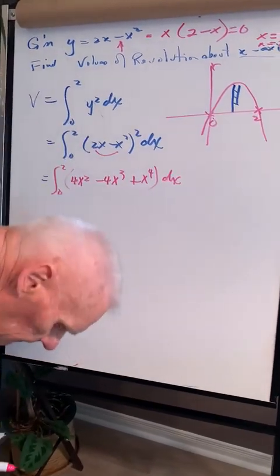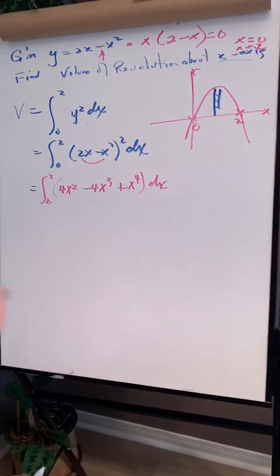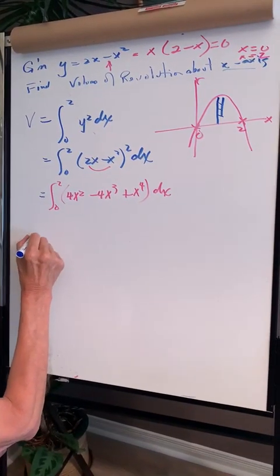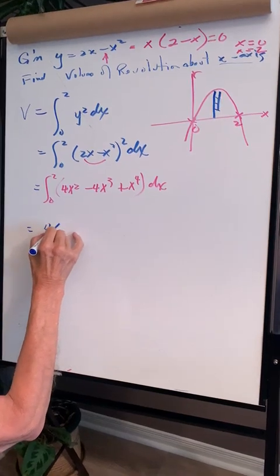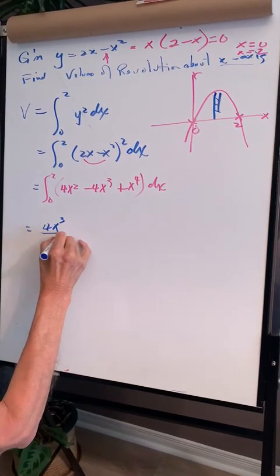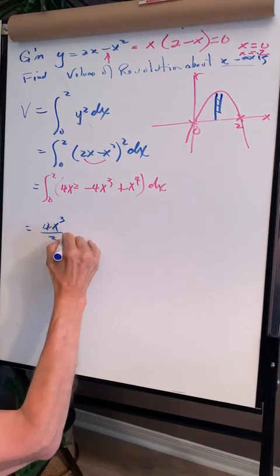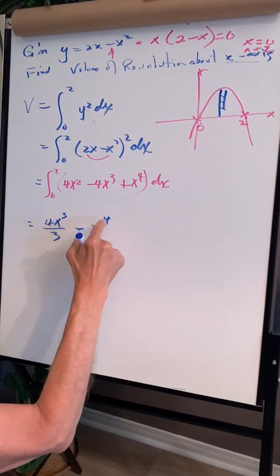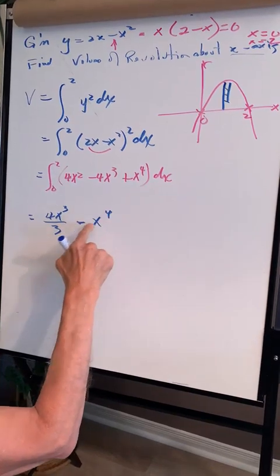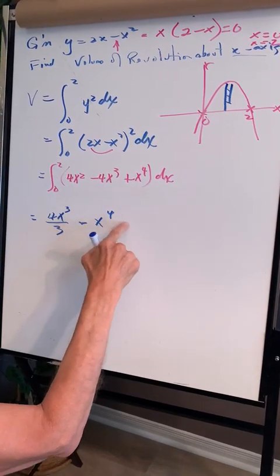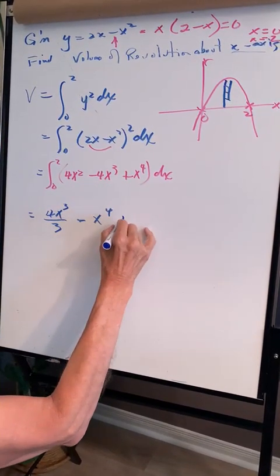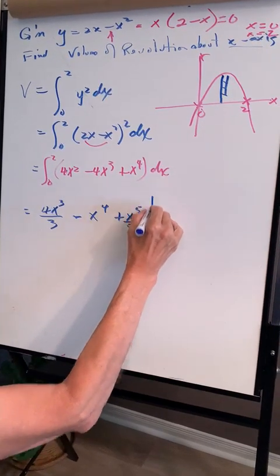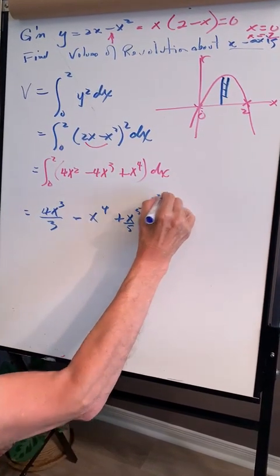Now let's integrate that. Add 1 to the exponent and divide by the new exponent: 4x squared integrates to 4x cubed over 3. The 4x cubed term integrates — noting that expanding gives 4x cubed — to x to the 4th. And x to the 4th integrates to x to the 5th over 5. We evaluate this from 0 to 2.